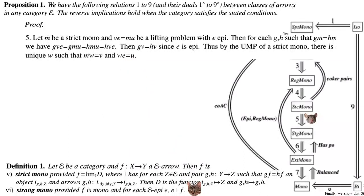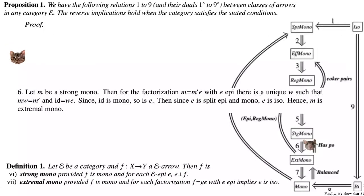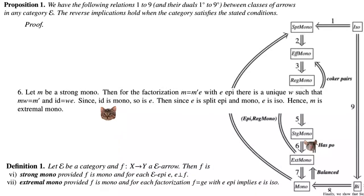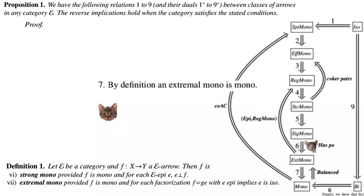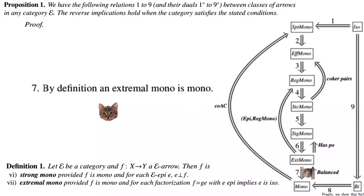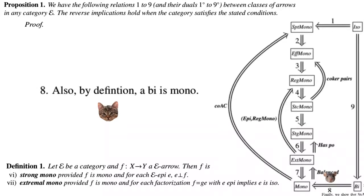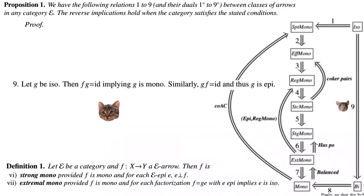For (6): let M be a strong mono. For the factorization M = M'E with E epi, there is a unique W such that MW = M' and id = WE. Since the identity is mono, so is E; then since E is both split epi and mono, E is iso — hence M is an extremal mono. For (7) and (8): by definition, extremal mono is mono, and bi is both mono and epi, so it is mono. For (9): if G is iso, then FG = id implies G is mono, and GF = id implies G is epi, so G is bi.